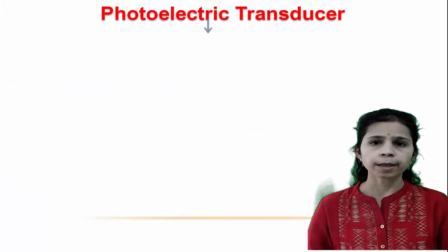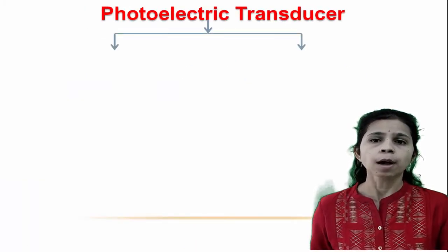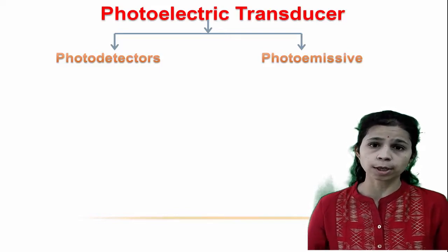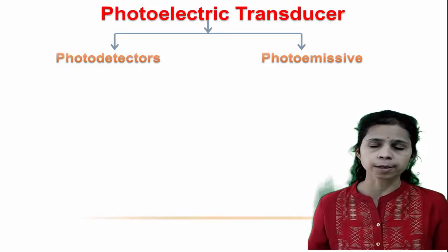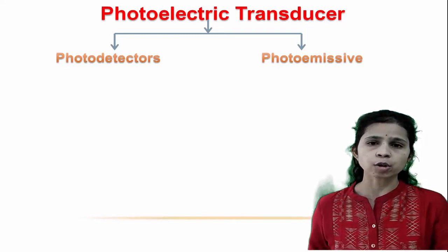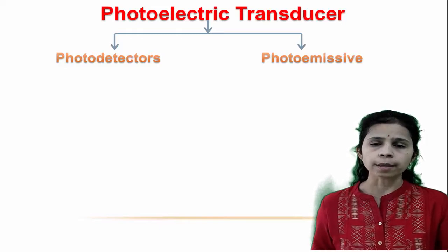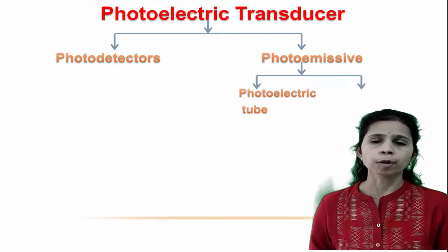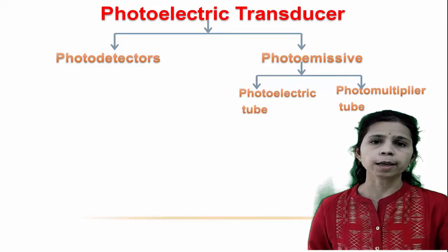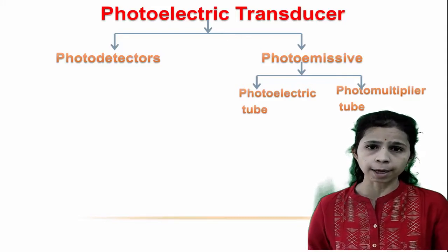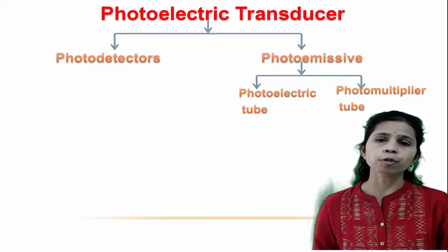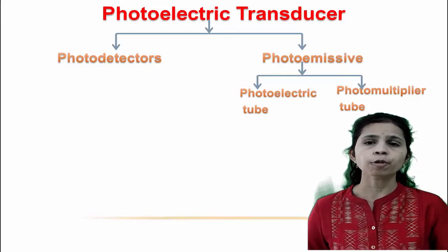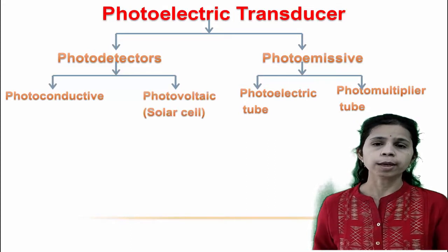Photoelectric transducers are broadly classified into two types: photo detectors and photoemissive devices. In photoemissive devices, when light falls on the cathode, known as the photocathode, electrons are emitted. These electrons are known as photoelectrons. Photoemissive devices are further classified into photoelectric tubes and photomultiplier tubes. The photoelectric tube has been replaced by semiconductor diodes and is no longer in use. In photomultiplier tubes, photoelectrons are multiplied using several dynodes.